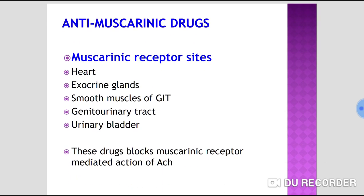In today's lecture, we are going to concentrate on anti-muscarinic drugs. The muscarinic receptor sites include the heart, exocrine glands such as salivary glands, sweat glands, and lacrimal glands.